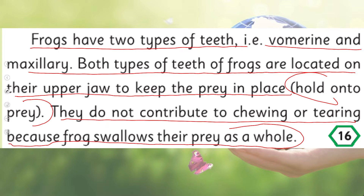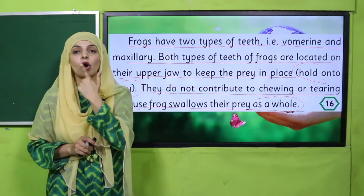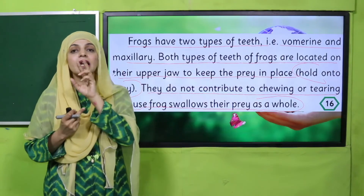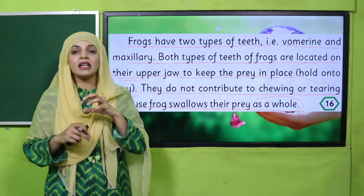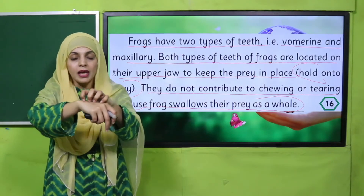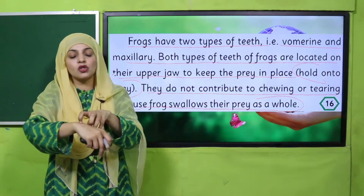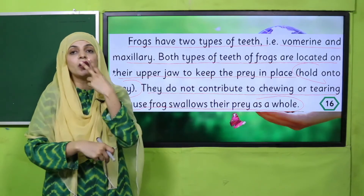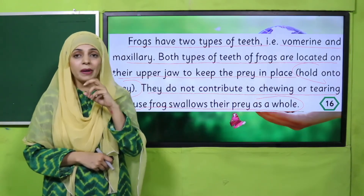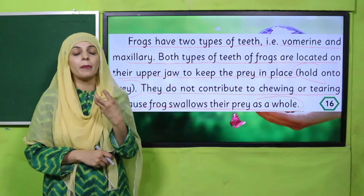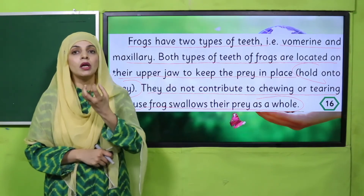Mandak — the frog — ke do tarah ke daant hoti hain: vomerine aur maxillary. Yeh dono daant uske upper jaw mein present hoti hain — upar hoti hain, neeche nahi. Inका kaam prey ko hold karna hota hai. Jo bhi cheez pakate hain — koi insect — to they hold them with these two types of teeth. Yeh tearing mein aur chabaane mein help nahi karte, kyunke frog apne khaane ko as a whole swallow kar leta hai — usko chew nahi karta, chote particles mein divide nahi karta.